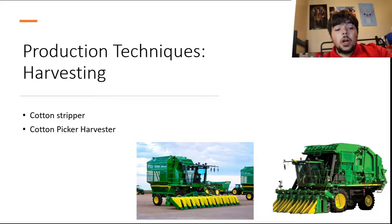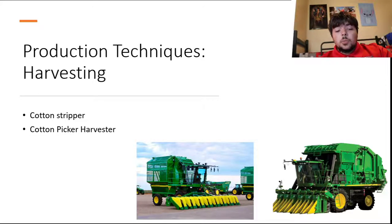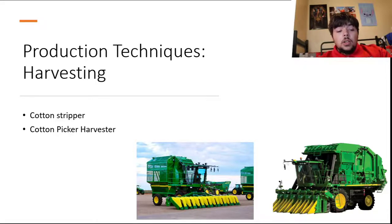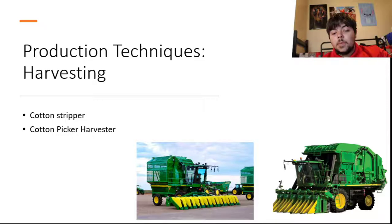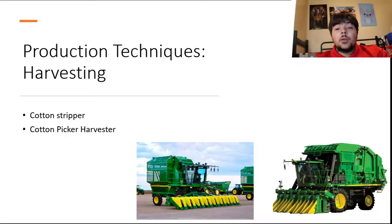The picture on the left is a cotton stripper. Cotton strippers first came about in the 1870s and gained popularity in the 1920s in West Texas cotton fields. It is used in areas of shorter growing seasons, low input production, and it removes the entire cotton boll from the plant. The picture on the right is a cotton picker, which first came about in the 1920s. It is used in long growing seasons with long staple cotton and removes only seed cotton, which does cause a higher production cost.